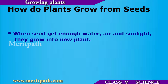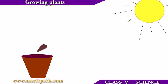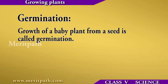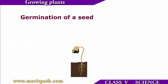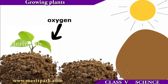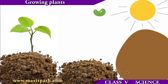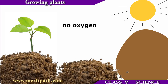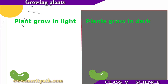From the seed, how do plants grow? When the seed gets enough water, air and sunlight, it grows into a new plant. Let us learn the process of germination. Germination is the process by which a seed turns into a baby plant. All seeds need moisture, oxygen and the right temperature to germinate, or they remain dormant. Some seeds need light to germinate while others need darkness.